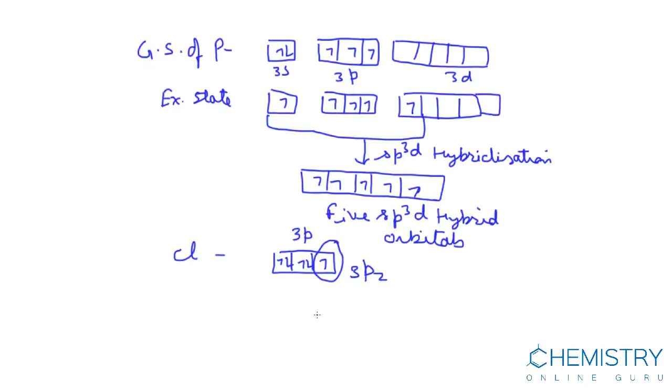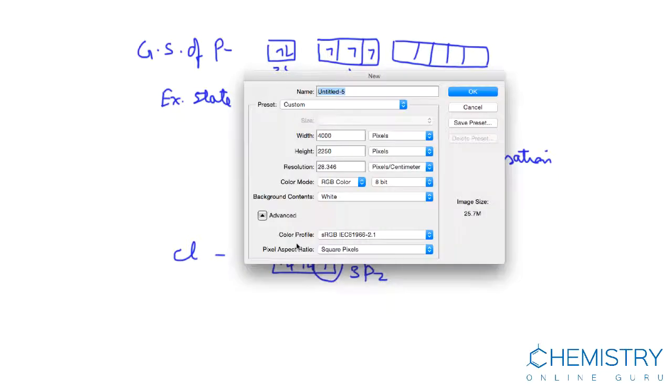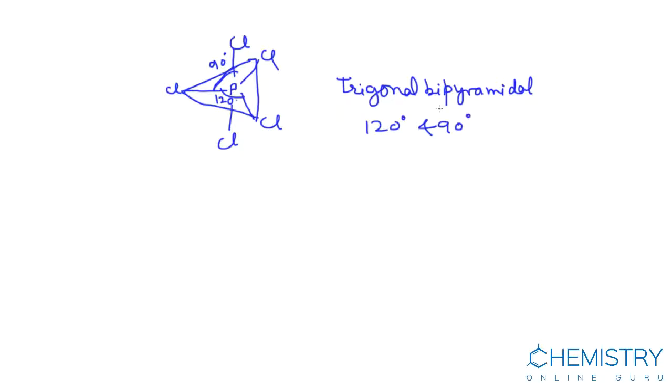Their geometry is trigonal bipyramidal. This bond angle is 120. This is axial position. Two Cl are present at axial position and this bond angle is 90 degrees. So, geometry of PCl5 is trigonal bipyramidal and bond angles are 120 degrees and 90 degrees.